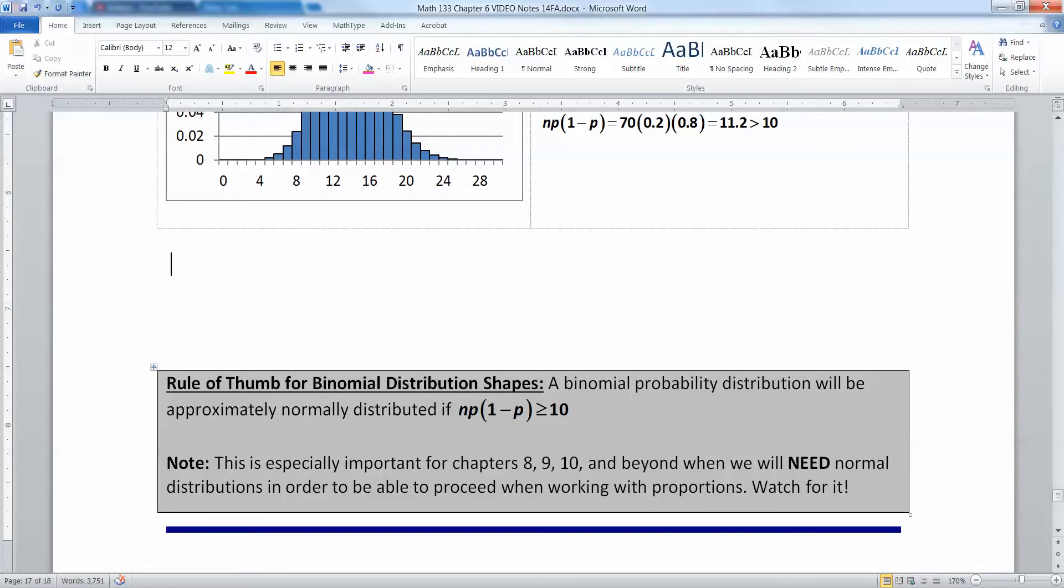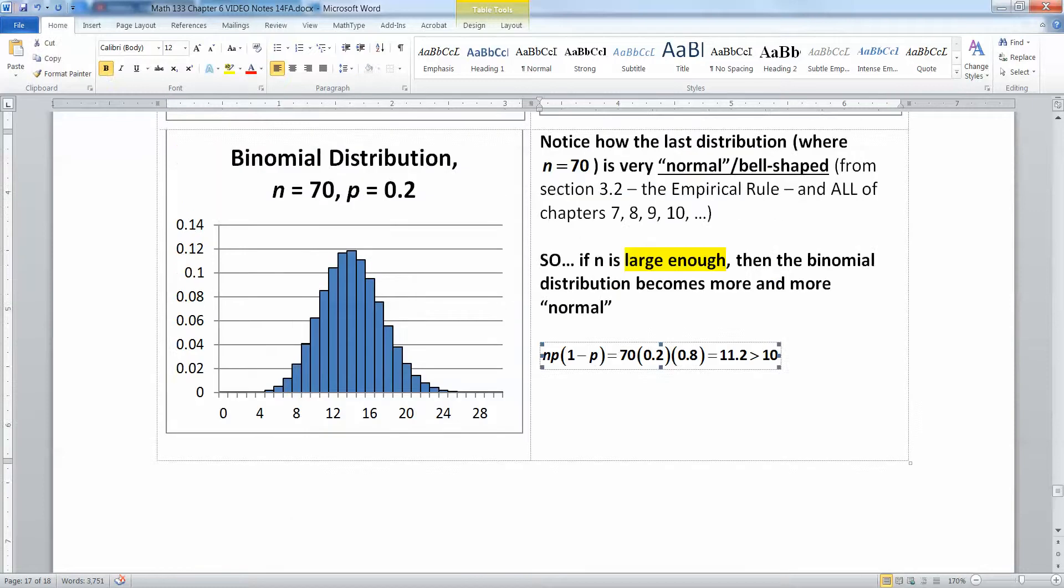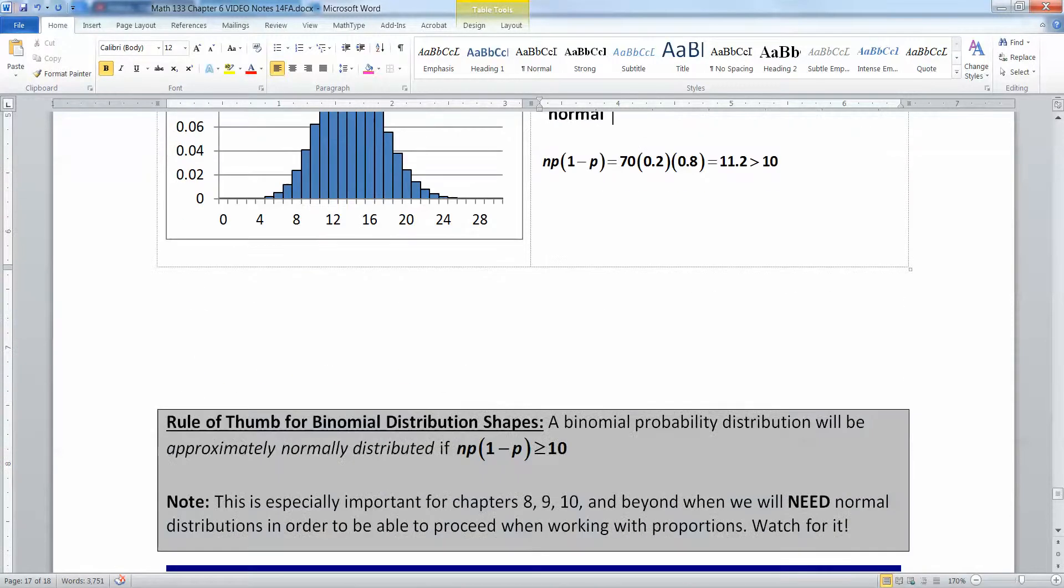Namely, that a binomial distribution will be approximately normally distributed if n times p times (1 minus p) is greater than or equal to 10. This is absolutely essential for all the rest of this course. We're going to need to know that we have a normal distribution in order to be able to do the things that we need to do in those later chapters. So this is going to come back to haunt you in a big way. And you're seeing here why it happens. If something follows a binomial distribution and your n is really big, then it will shift more or less to a normal curve. And that normal curve is very powerful for us. And we'll talk more about that in chapter seven. So I'll see you back here then.